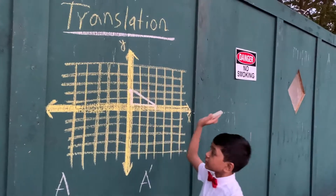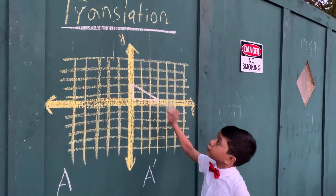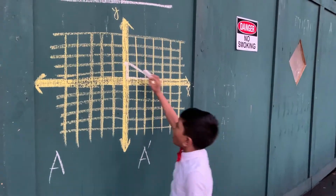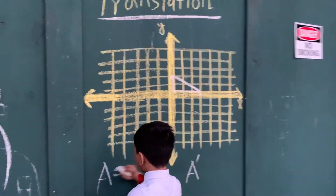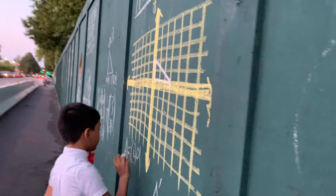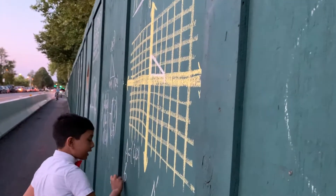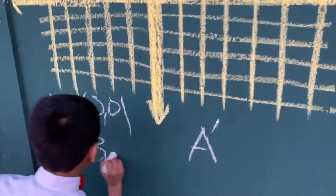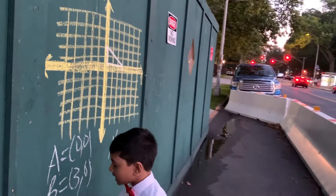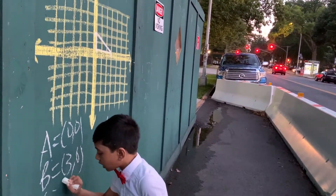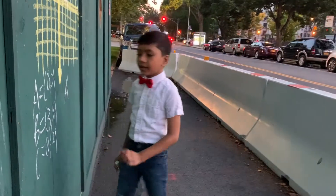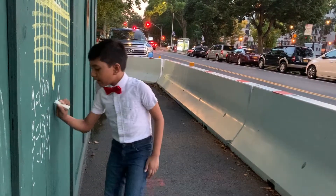First we have our right triangle. A is equal to (0, 0), the origin. B is going to be equal to (3, 0), and C is going to be equal to (0, 2). I'm going to transform it by the vector (3, 2).